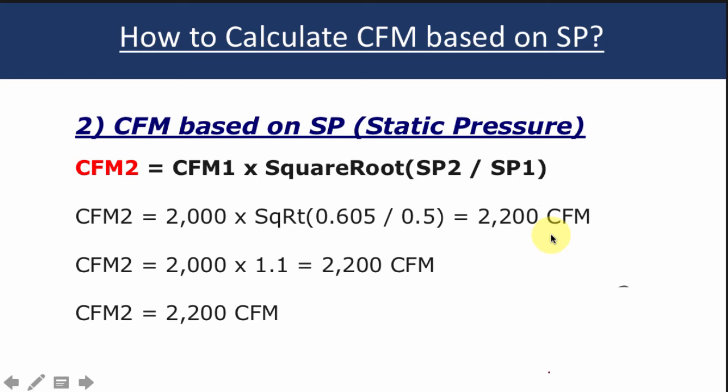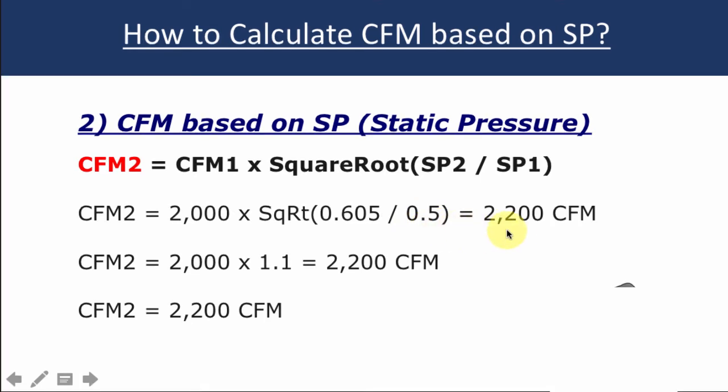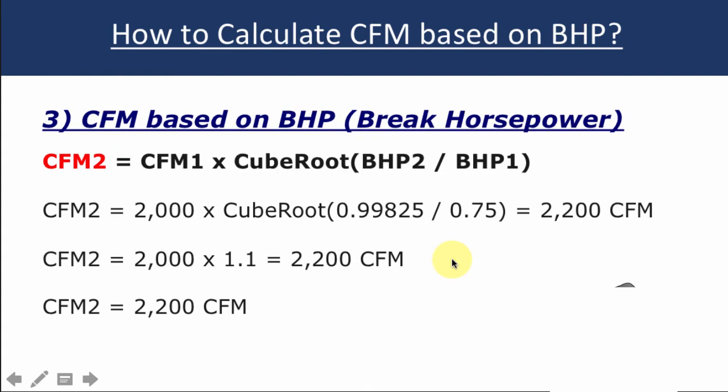Now with static pressure, it's a little different. Now you're dealing with the square root of the static pressure new over the old. So just work these numbers out, pause the video, work these formulas, look at the formula and practice them. They're pretty simple. In this case, the 2000 CFM of existing and let's say we're increasing the static pressure to 0.605 over the existing static pressure would tell us that you would have 2200 CFM. So just work these formulas out.